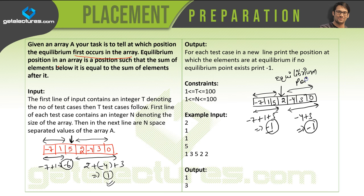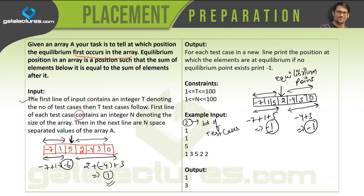So that is what an equilibrium point is. Now the problem is fairly easy and very simple. Let us check how the input is given. The first line of input contains t, denoting the number of test cases — that is, how many test cases we are going to check. The first line of each test case contains an integer n denoting the size of the array.